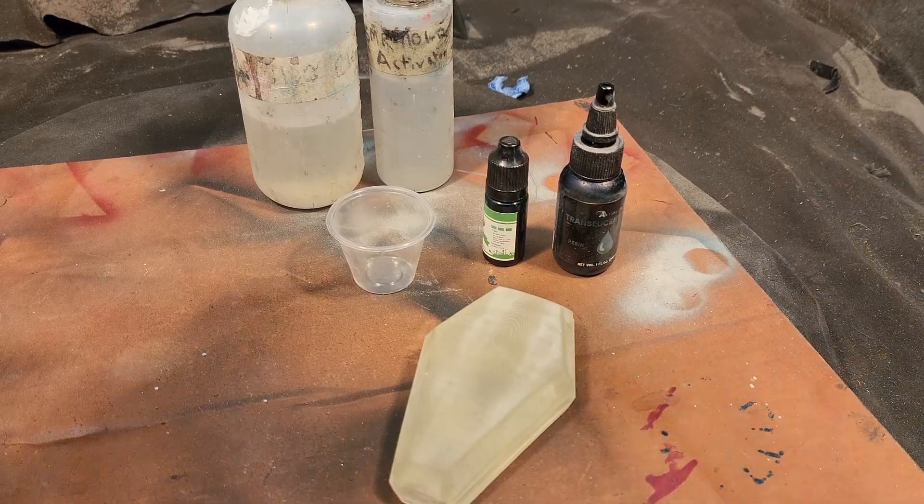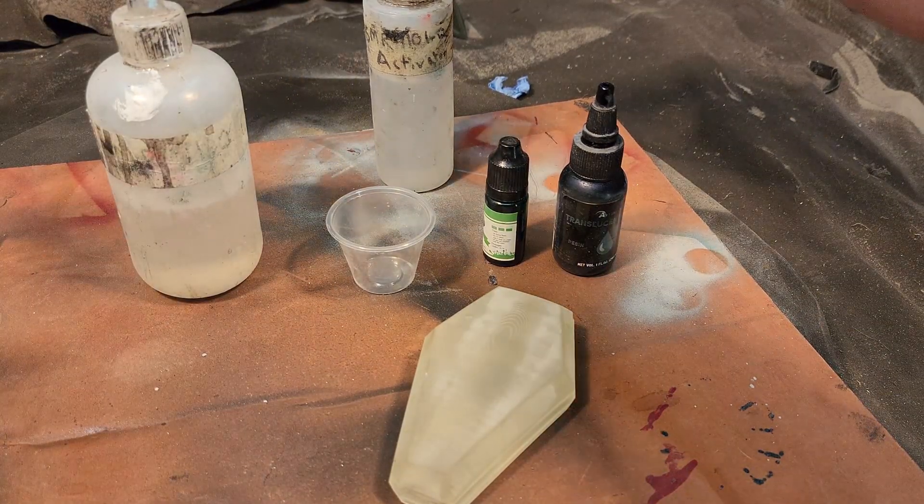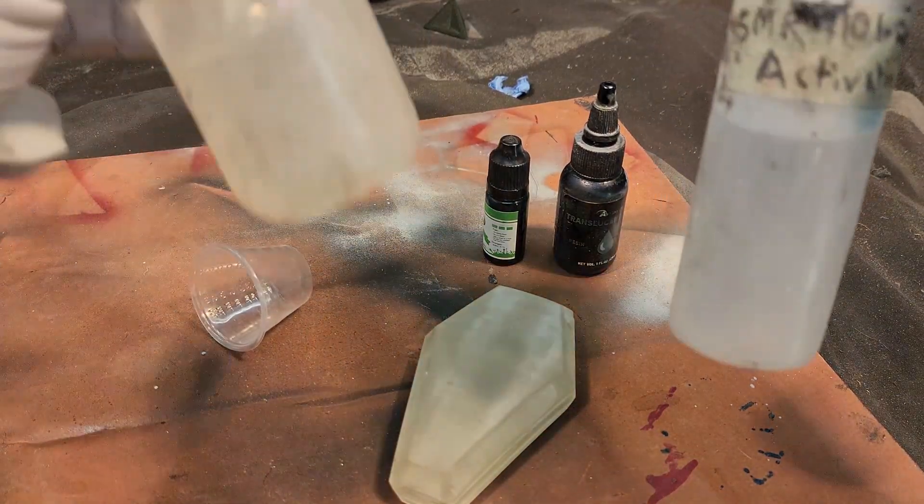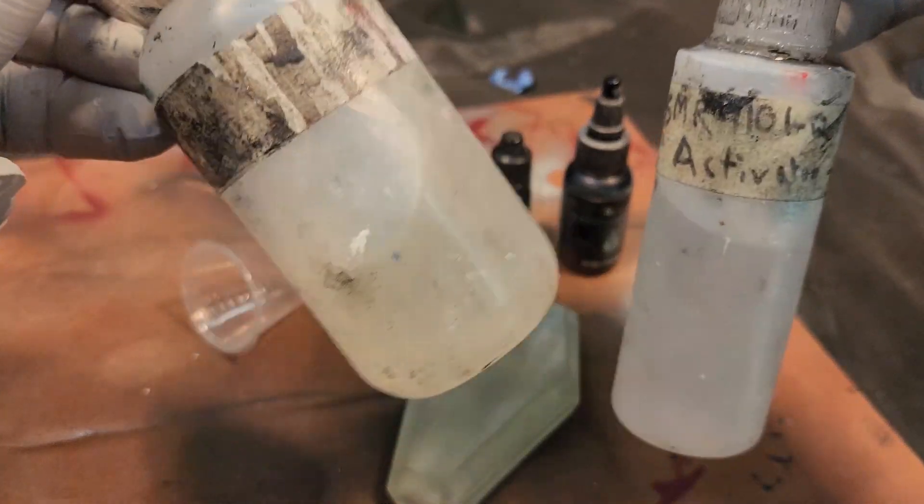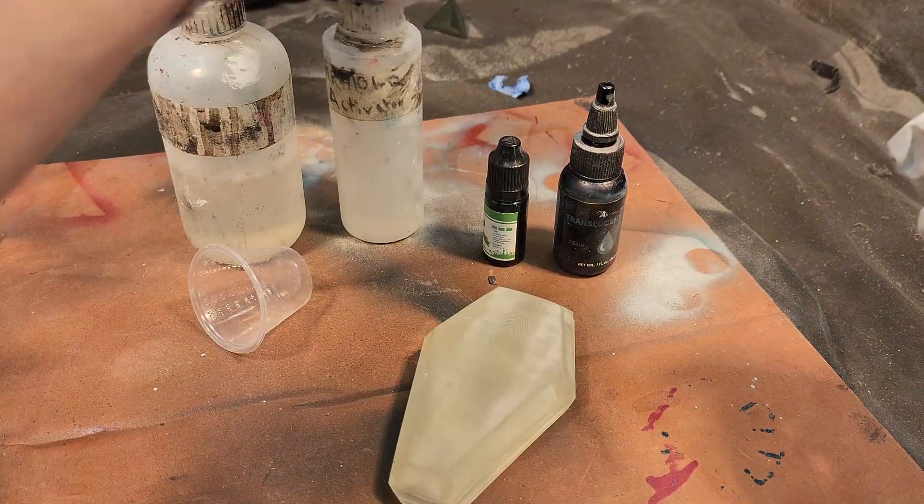Okay, so I've got basically everything that I need laid out right here, plus an airbrush. And let me walk you through it. So this is just a 2K clear. I'll put a link in the description about the particular clear that I use, but they're two-part urethanes.